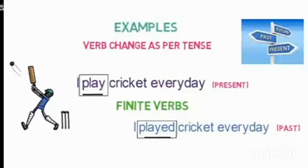Let's take an example. When I say 'I play cricket every day,' play is the verb. The same sentence, when written in past tense, becomes 'I played cricket every day.' In the first sentence, the word play represents present tense. But in the second sentence, play changes to played, now representing past tense. So the finite verb changes as per tense.